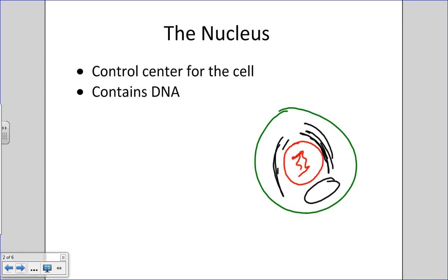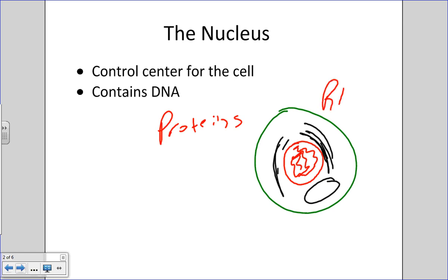We call it the control center because, as mentioned in the previous talk when I discussed the organelles of the cell, the main job that cells do is produce proteins. Cells are essentially protein factories. You've got the nucleus that contains DNA, then you've got the rough endoplasmic reticulum used to synthesize proteins to be excreted out of the cell.